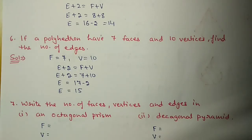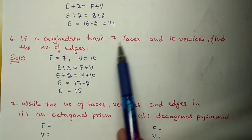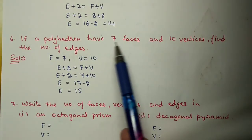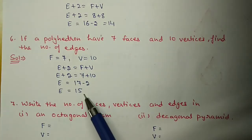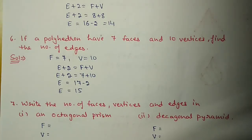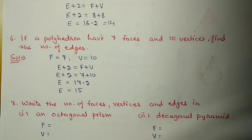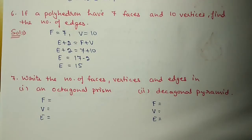Question number 6: If a polyhedron has seven faces and ten vertices, find the number of edges. This is similar to the previous question - faces are given, vertices are given, substitute in the formula and you will get the value of edges.